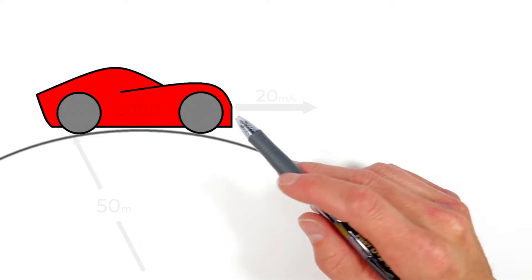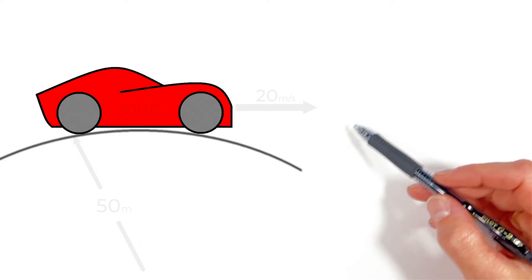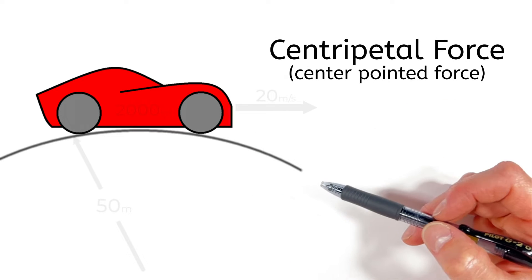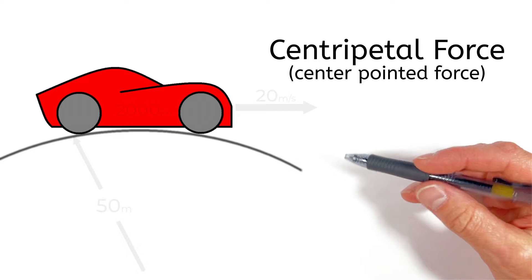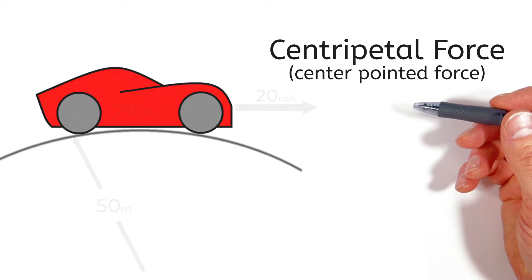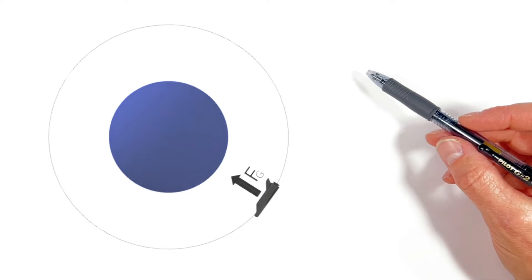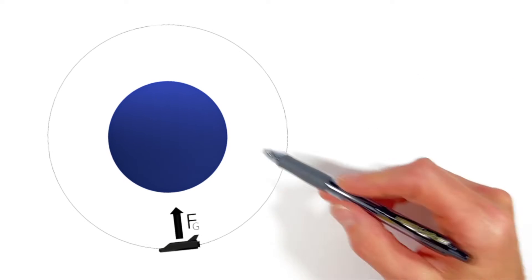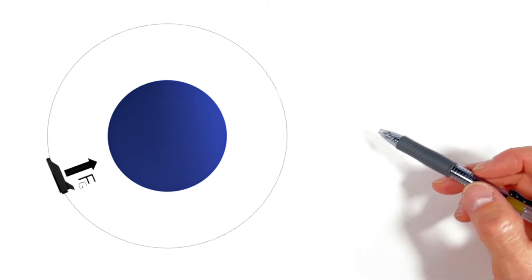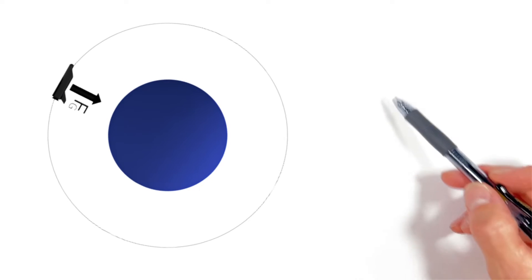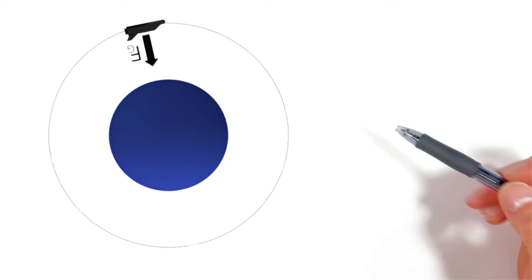The key in this entire problem is that anytime something's moving in a circle there's a centripetal force responsible for causing that object to move in a circular path. In the situation where we have a satellite in orbit around some central planet it's gravity that pulls that satellite inward causing it to move in a circular orbit.